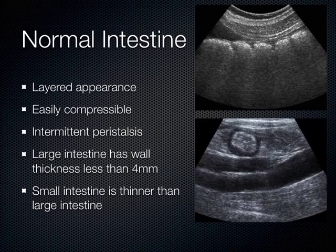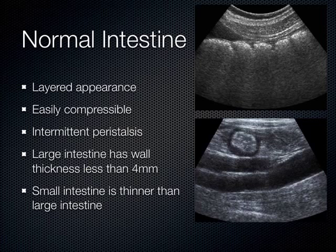Normal intestine has a layered appearance and is easily compressible. You'll see you compress on those loops of bowel — they just squirt closed with no problem. They peristalse every 10 to 20 seconds. That's normal. With disease states of the bowel, you can see hyperperistalsis initially and then eventually aperistalsis — no movement at all of the bowel.